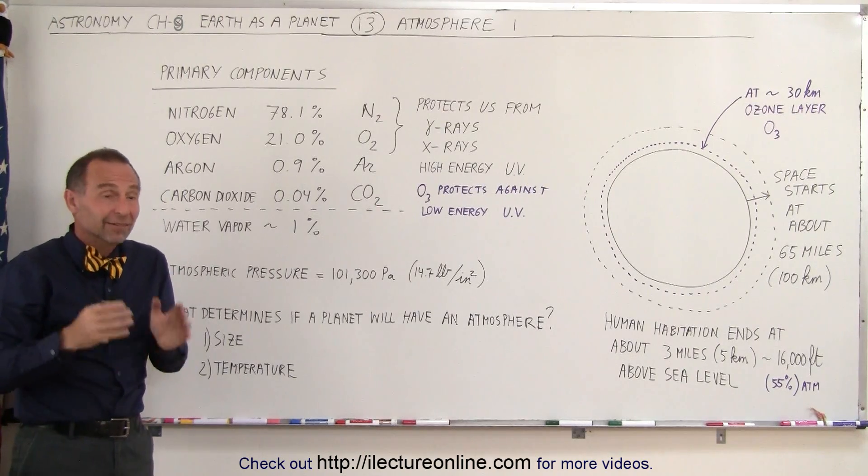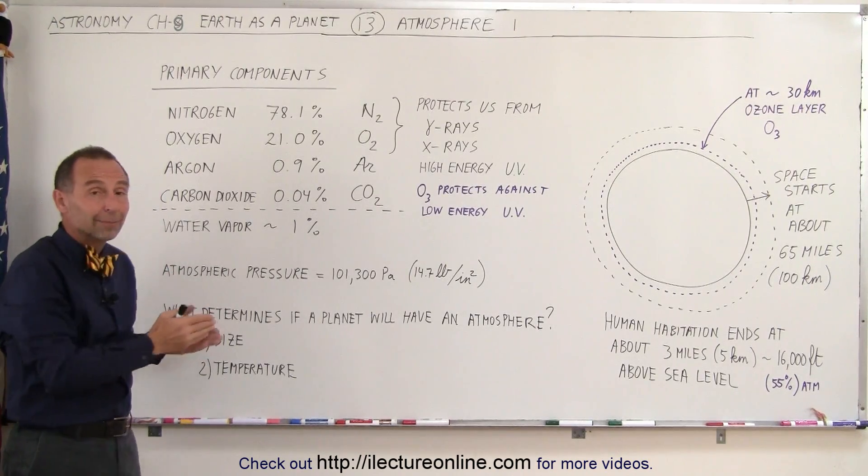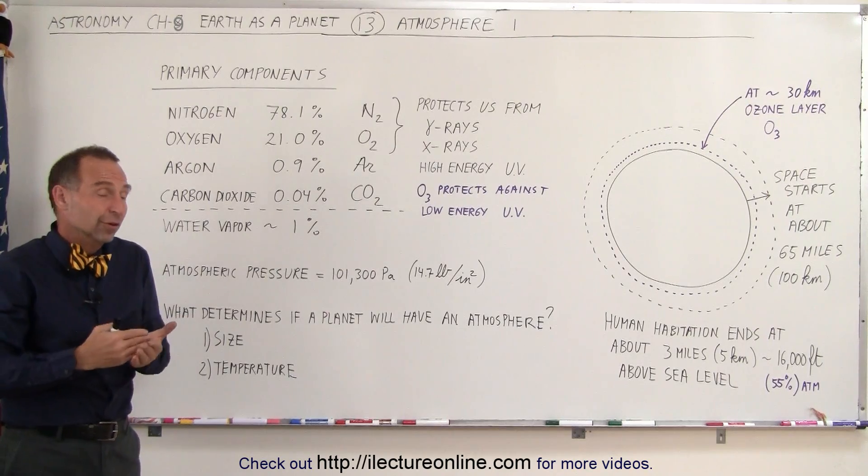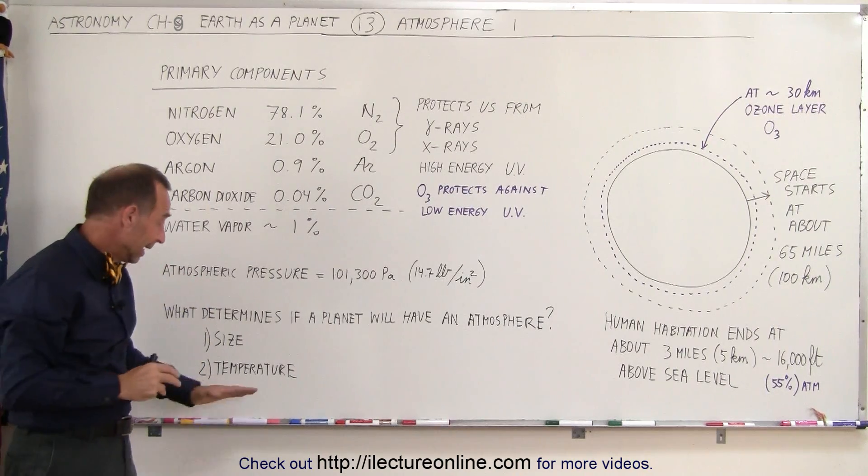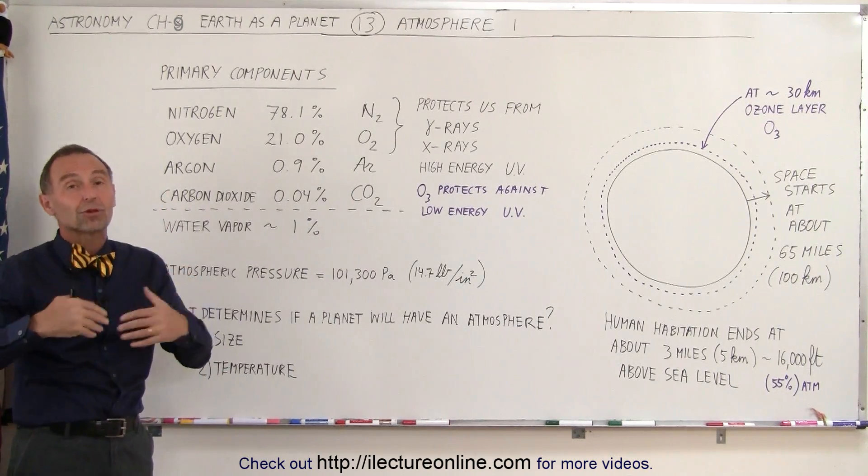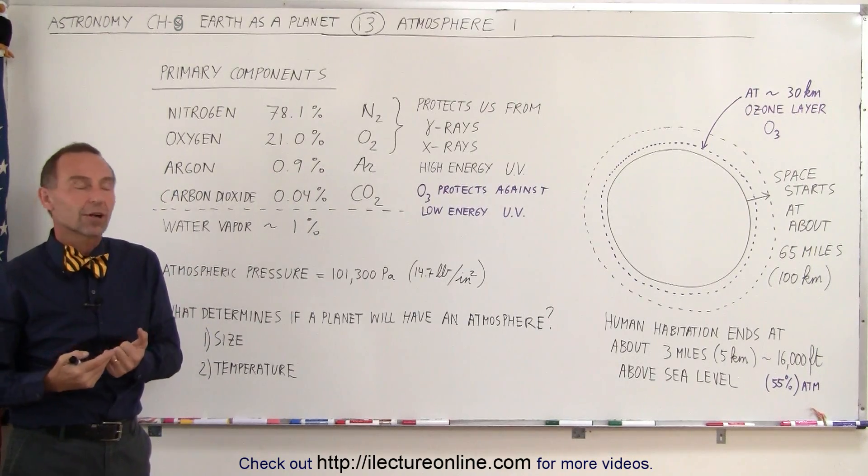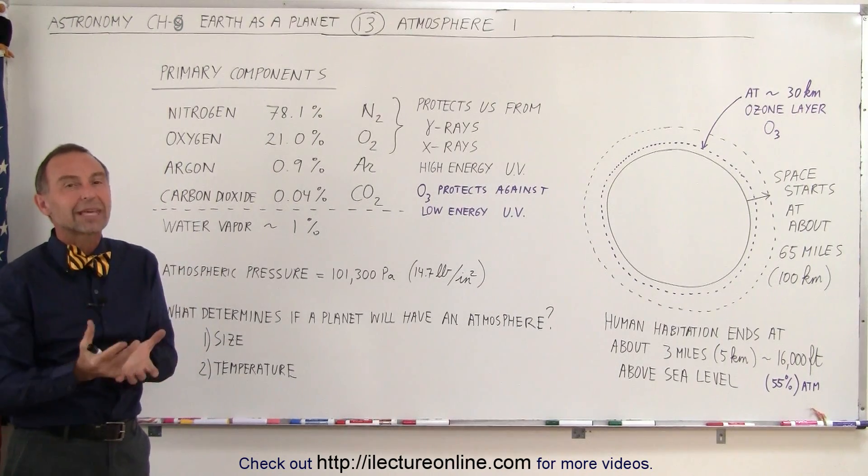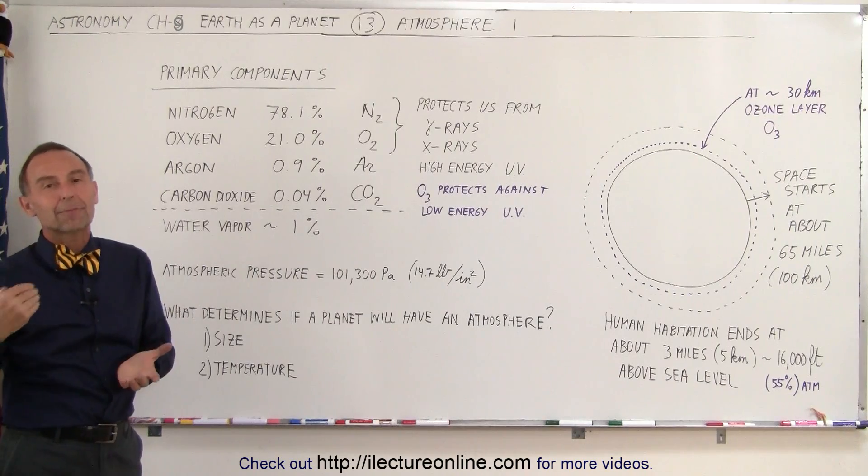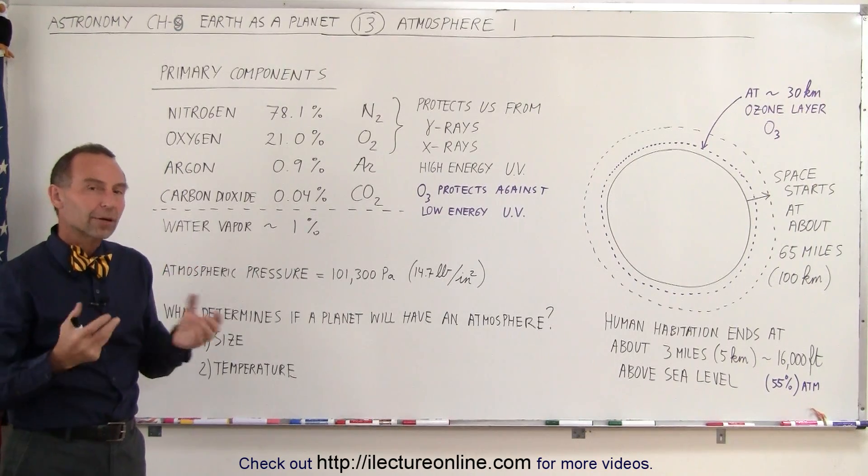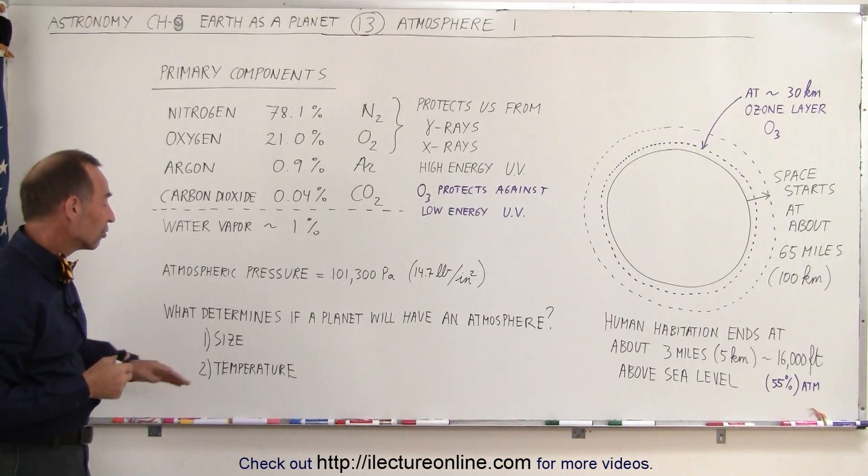In the case of Mercury, since Mercury doesn't make it either on size or on temperature, it is too small of a planet, and it has too high of a temperature, Mercury does not have an atmosphere at all. Just small trace amounts of gases, which is basically the captured solar particles in the solar wind that reach Mercury.